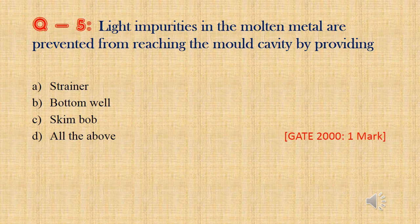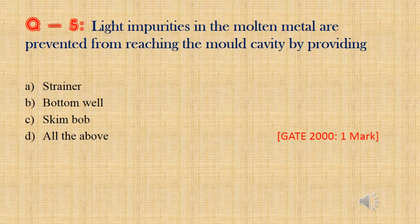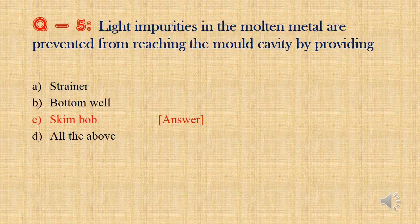Question 5: Light impurities in the molten metal are prevented from reaching the mold cavity by providing — Option A: Strainer. Option B: Bottom well. Option C: Skim bob. Option D: All the above. Skim bob is used to filter the lighter impurities. So the answer is Option C: Skim bob.